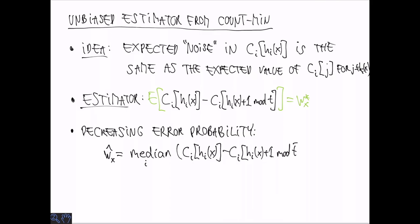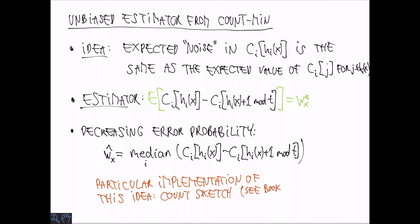So it's possible to show that with high probability again exponentially smaller in d the median is going to be close to the expectation with high probability. A particular implementation of this idea is a so-called count sketch which is described in the book but is not part of the curriculum for this course. Thank you.